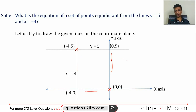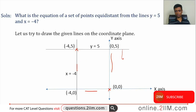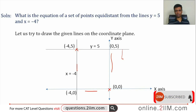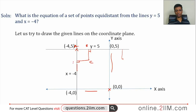We want to find a set of points equidistant from these two lines. Take a point like (1, 4) — the distance to y = 5 and the distance to x = -4 are not the same. When we say distance, we refer to perpendicular distance. We are looking for some point such that this distance equals that distance. The shape formed is a square — all four right angles — with points labeled A, B, C, D.